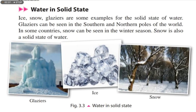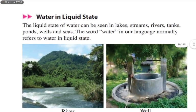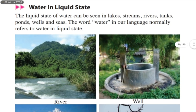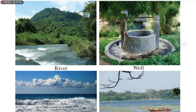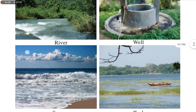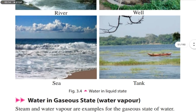In some countries, snow can be seen in the winter season — snow is also a solid state of water. The liquid state of water can be seen in lakes, streams, rivers, tanks, ponds, wells, and seas. When we hear the word water, it normally refers to water in liquid state. This picture shows examples of liquid state of water: rivers, wells, sea, and tanks.